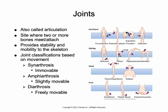Joints are classified based on the degree of movement they permit or on the connecting tissues that hold them together. Based on movement, a joint can be classified as an immovable joint, a slightly movable joint, or a freely movable joint — with the terminology being synarthrosis, amphiarthrosis, or diarthrosis, respectively. From connective tissue structure, they are classified broadly as fibrous, cartilaginous, or synovial.